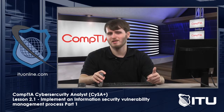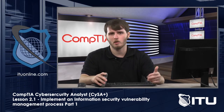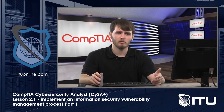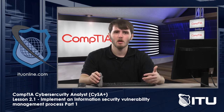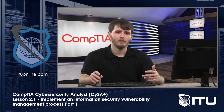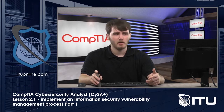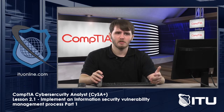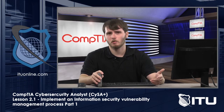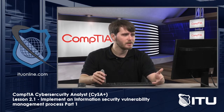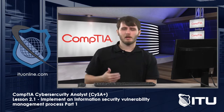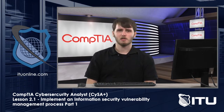A security policy might also outline how data is allowed to travel through the network — which parts of the network can communicate with each other, who can access the data, how they access it, and a description of what the data is (not the contents, but enough to know what you're protecting). You might also see a policy outlining basic disaster recovery details, covering the general goals of your disaster recovery plan.